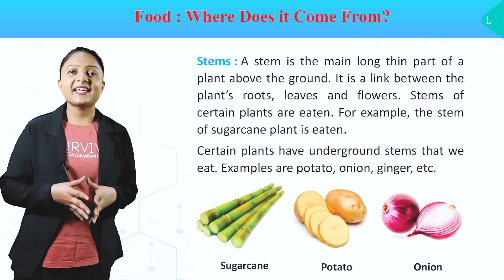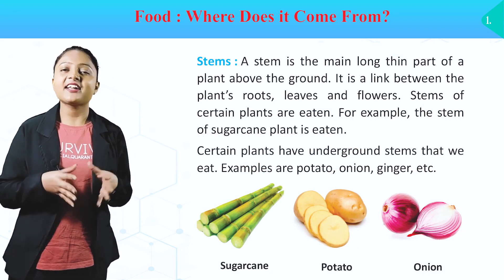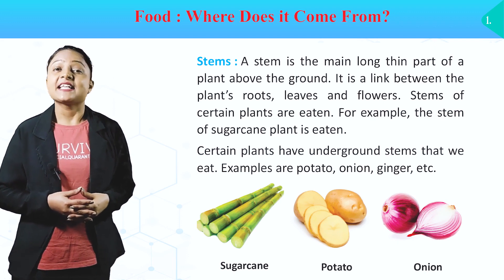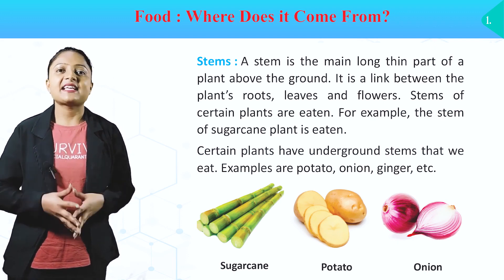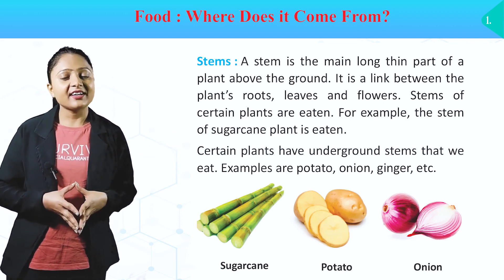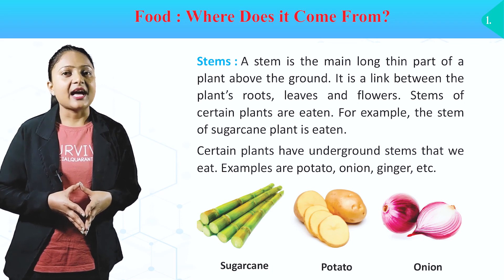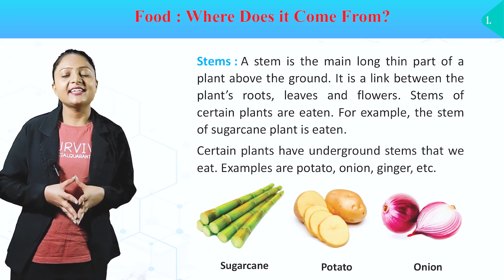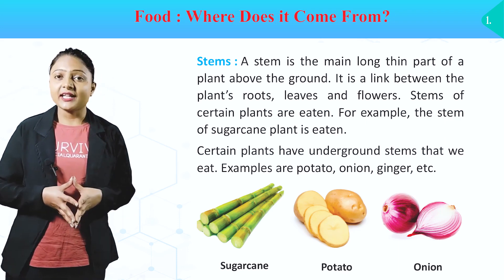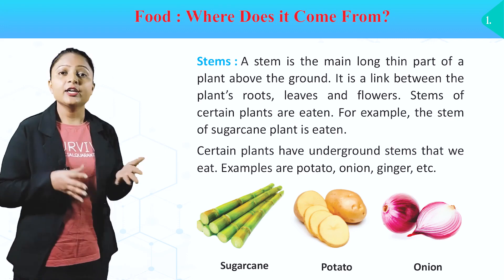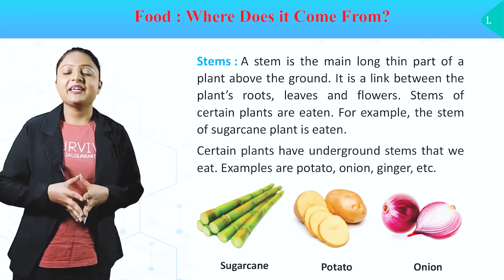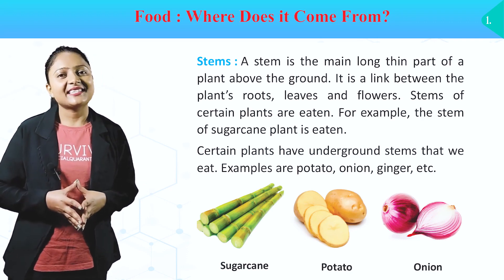Stems. A stem is the main long thin part of the plant above the ground. It is a link between the plant's root, leaves and flowers. Stems of certain plants are eaten. For example, the stem of sugarcane plant is eaten. Certain plants have underground stems that we eat — examples are potato, onion, ginger, etc. Toh hum kuch stems ko bhi khate hai, jaisi ki sugarcane jo ek stem hai. Uske alawa potato and onion bhi stems hai, but woh underground stems hai.